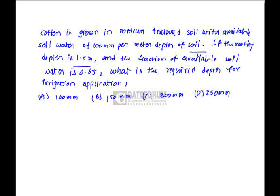Cotton is grown in medium textured soil with available soil water of 100 mm per meter depth of soil. If the rooting depth is 1.5 meter and the fraction of available soil water is 0.65, what is the required depth for irrigation application?